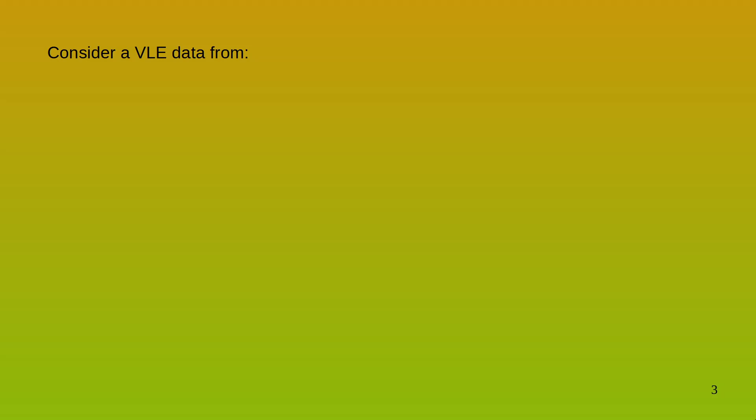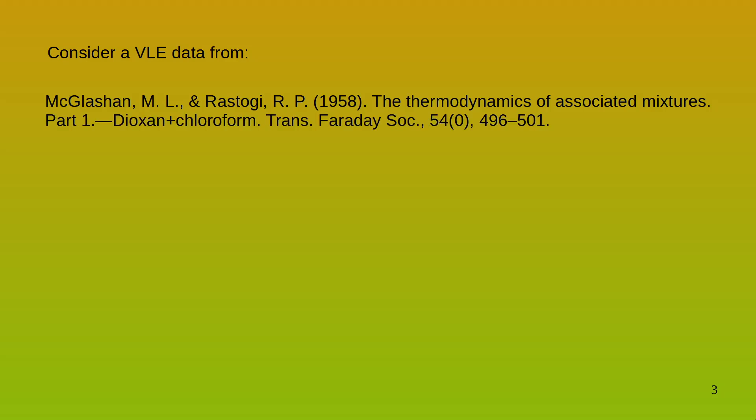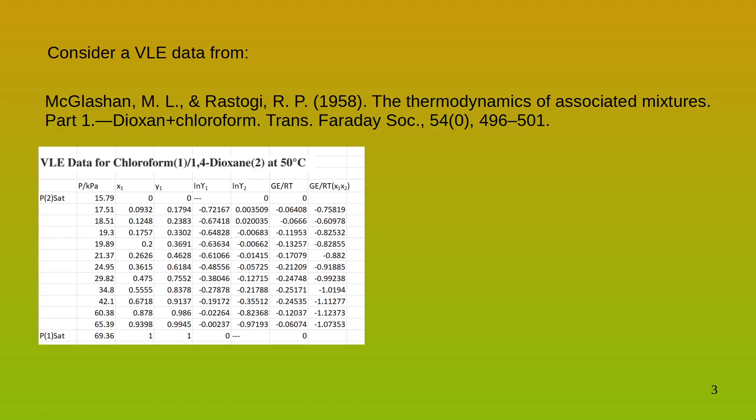Now to study activity coefficients, let's take a VLE data of a non-ideal mixture. This is from McGlashan and Rastogi. It's a non-ideal system of dioxane and chloroform where chloroform is the more volatile component. And this is the VLE that I have extracted from the paper. It has the pressure of the system and the mole fraction of chloroform in the liquid and the vapor phase.